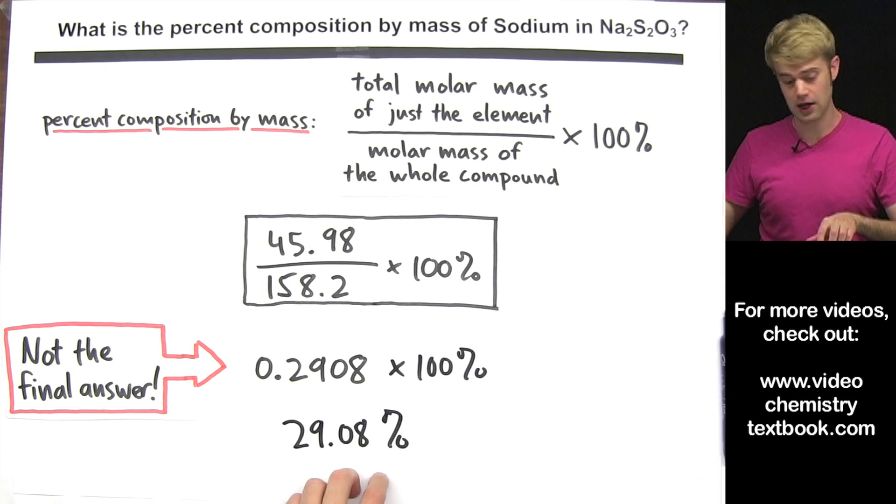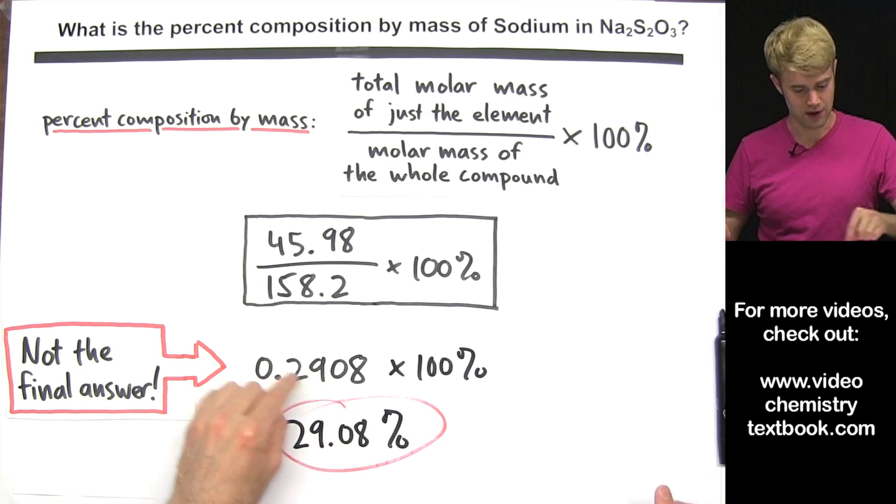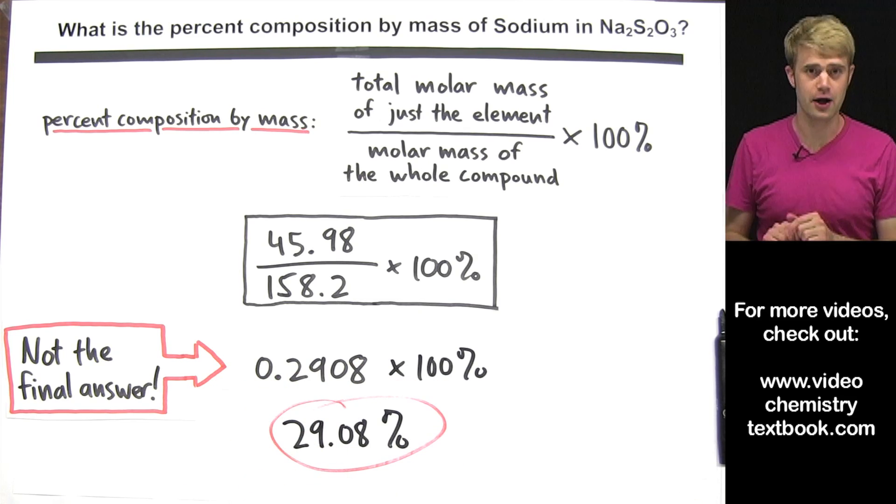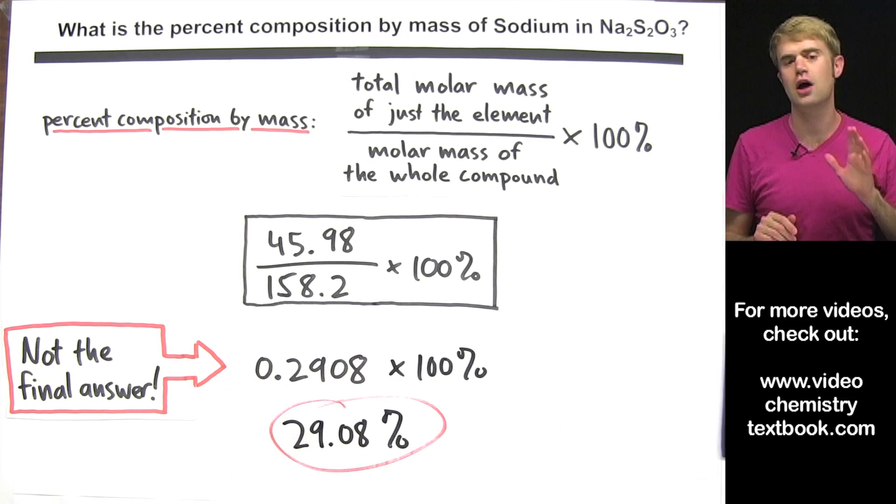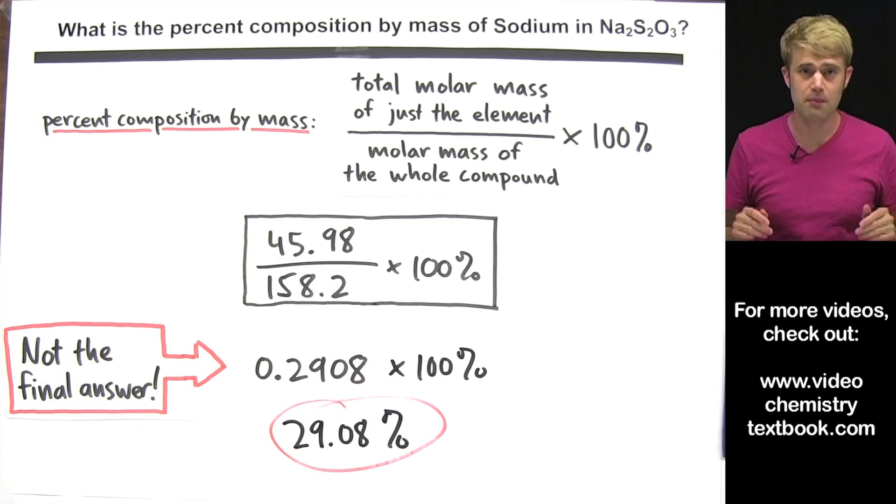So we're going to put that percentage sign after it. This is what the final answer should look like. This multiplied by 100%. So those are the two most common mistakes with percent composition by mass problems and now you won't make either one of them.